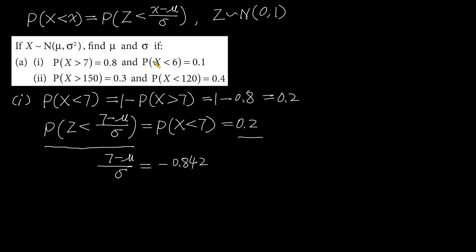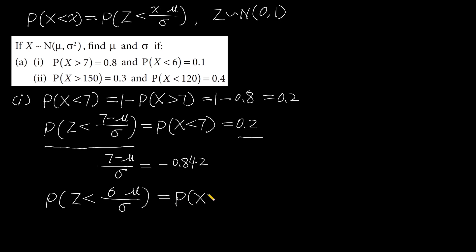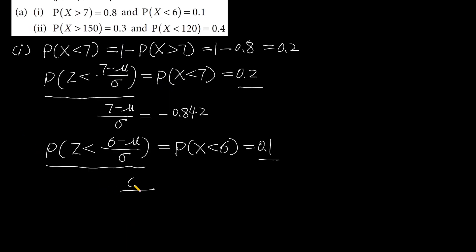We also know that the probability that x is smaller than 6 equals 0.1. Therefore, the probability that z is smaller than (6 minus mu) over the standard deviation equals the probability that x is smaller than 6, so this equals 0.1. Using the calculator, we find that (6 minus mu) over the standard deviation equals negative 1.284. This is equation 1 and this is equation 2.